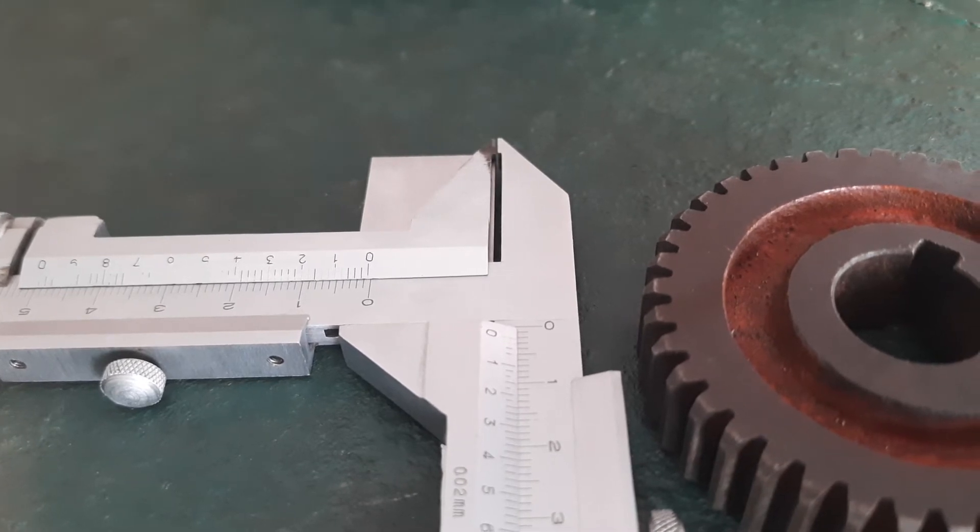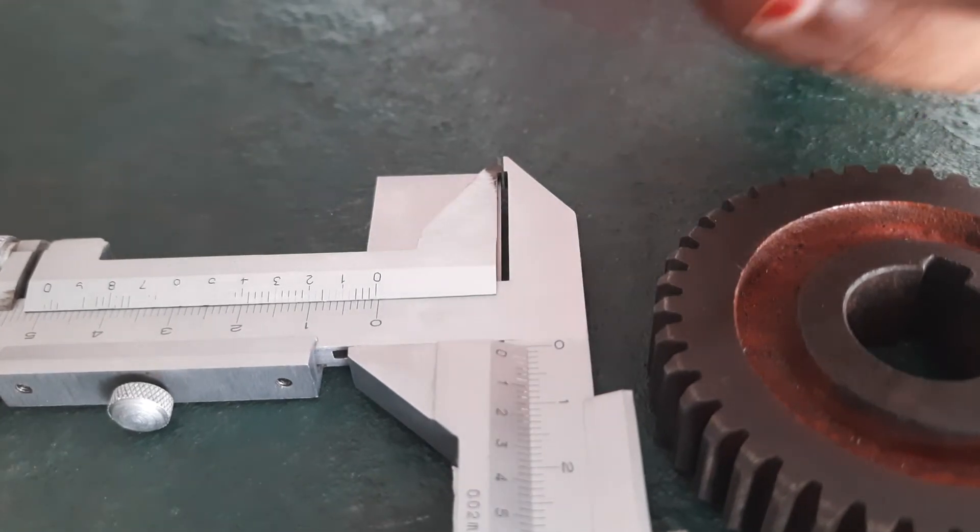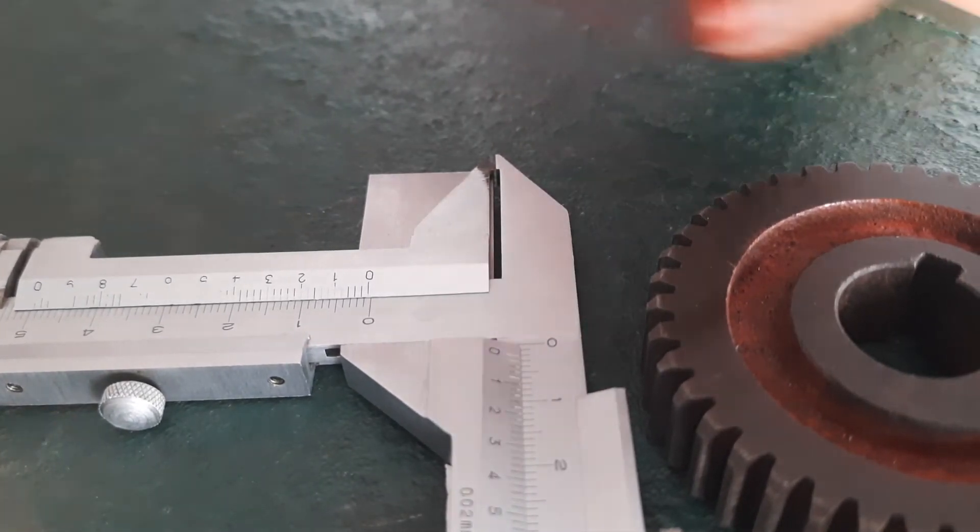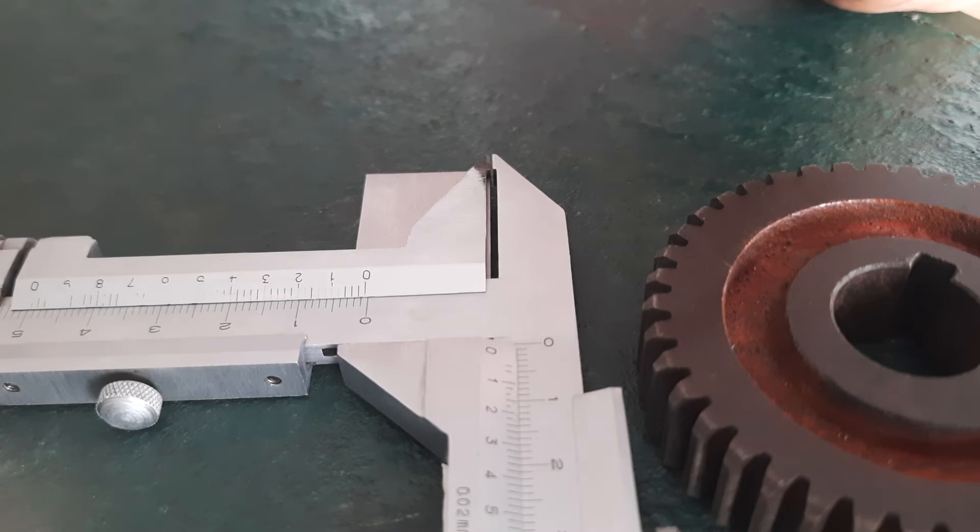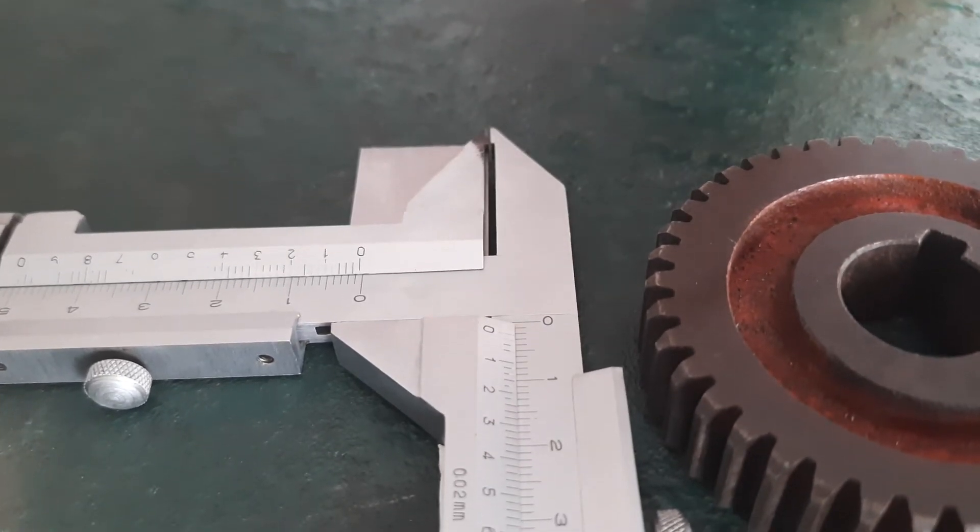The main things are: a vernier gear tooth vernier is used for measuring the tooth thickness of a gear tooth at the pitch circle of the gear. The horizontal vernier caliper is used for measuring tooth thickness of gear.